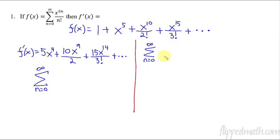So the derivative is, bring this 5n to the front. So it becomes 5n times x raised to the 5n minus 1 all over n factorial. So we just did the power rule. That's all we did.